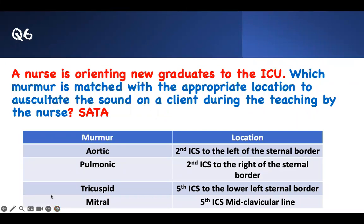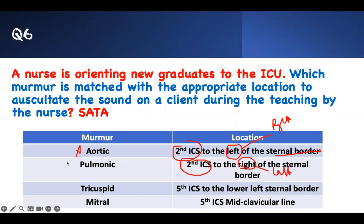Next question: A nurse is orienting a new graduate to the ICU. Which murmur is matched with the appropriate location to auscultate? The aortic area — second intercostal space, but on the right side of the sternal border, not the left. The pulmonic is on the second intercostal space, left side of the sternal border. The tricuspid is at the fifth intercostal space, lower sternal border. The mitral valve is at the fifth intercostal space at the mid-clavicular line. Tricuspid and mitral are correct; the others need adjustment.